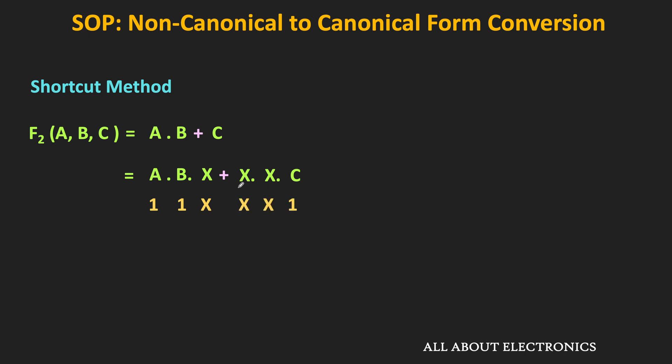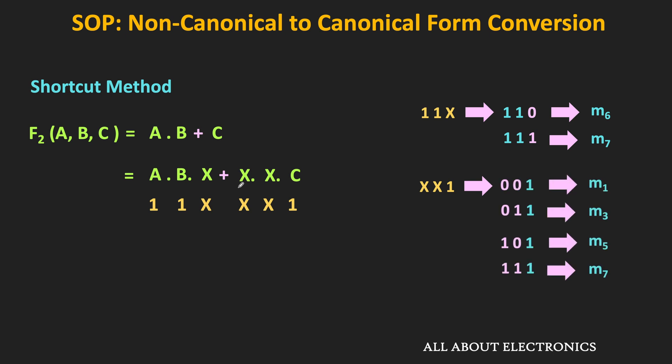For the first term 1·1·X: when X = 0 we get minterm m6, and when X = 1 we get minterm m7. For the second term X·X·1 with two unknowns, there are four possibilities giving corresponding minterms. Since m7 appears twice it is counted only once. The equivalent canonical SOP form is the summation of all these unique minterms.